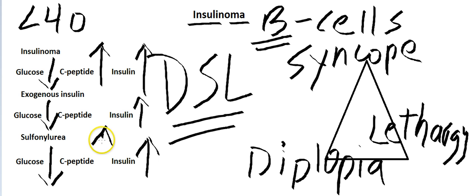Same thing is going to happen with sulfonylurea - C-peptide is going to be high. But if you're injecting insulin from outside, that insulin has no C-peptide, so this C-peptide is going to be down.